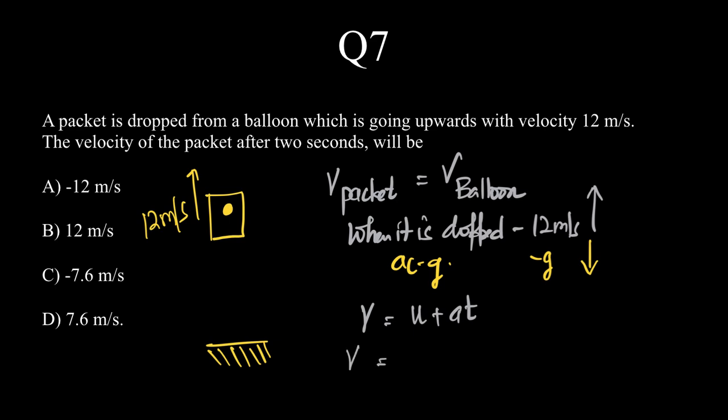u is the initial velocity. Here, v of packet is not equal to zero because it is going upwards with velocity 12 m/s. So that will be 12 m/s plus...